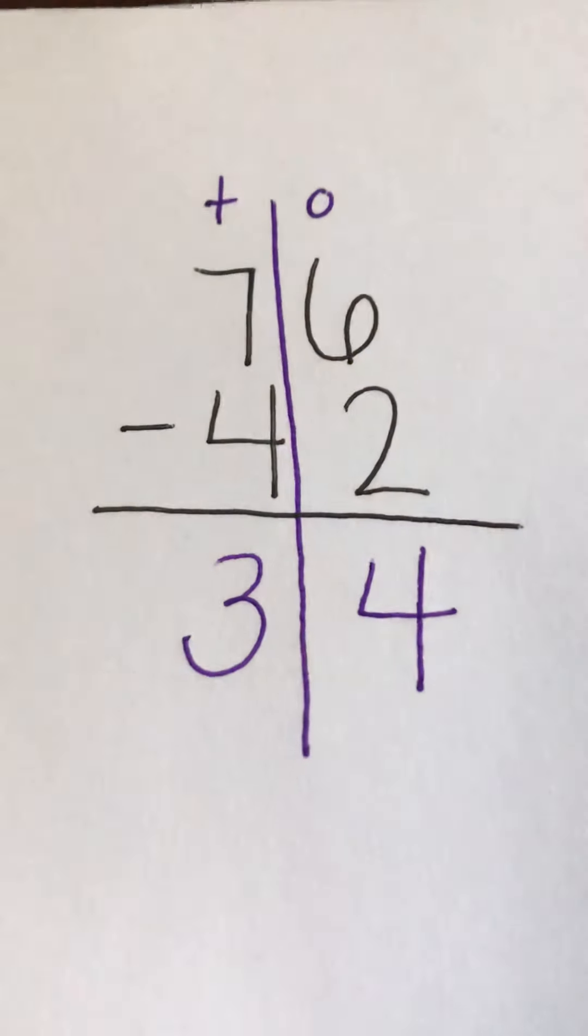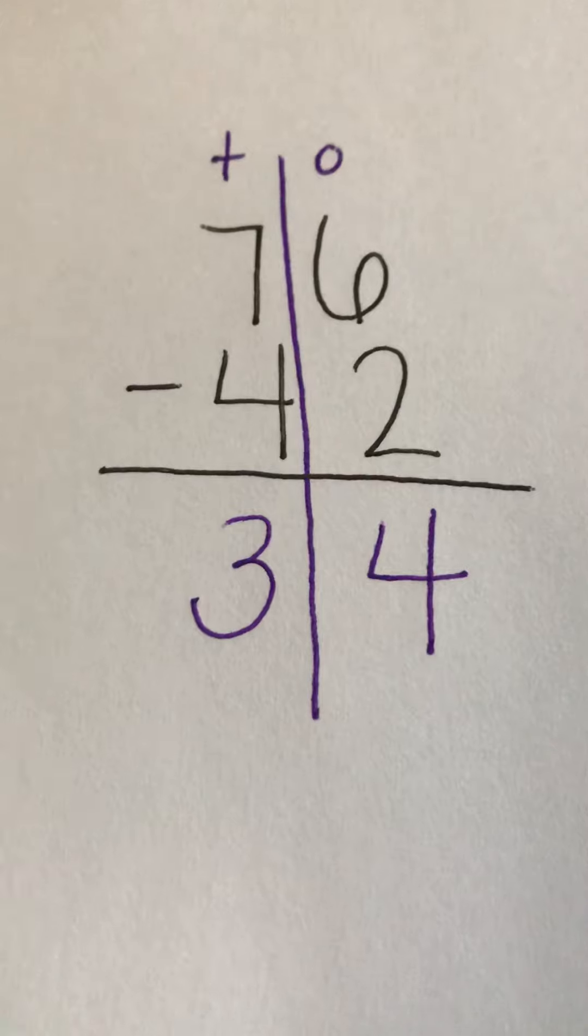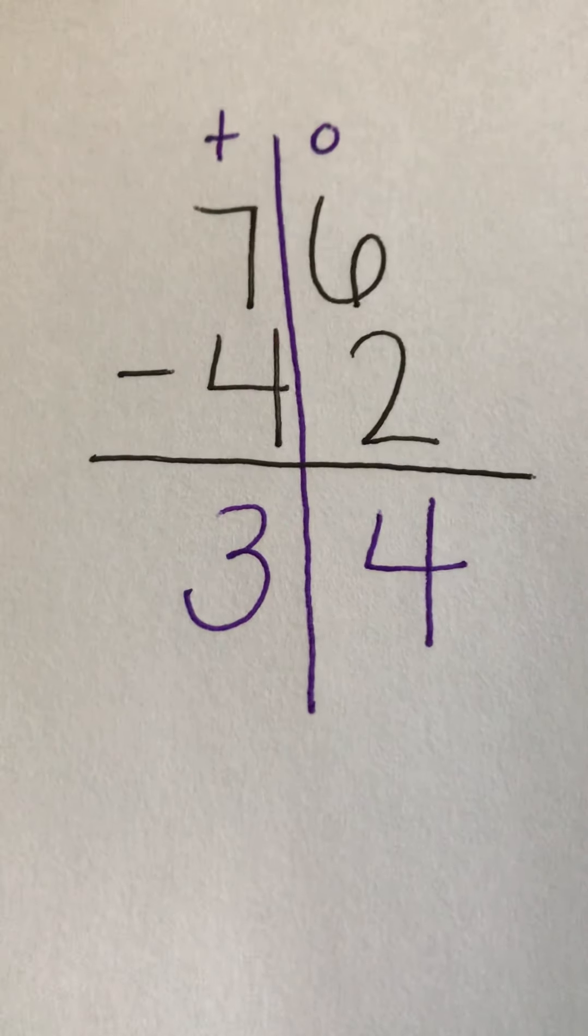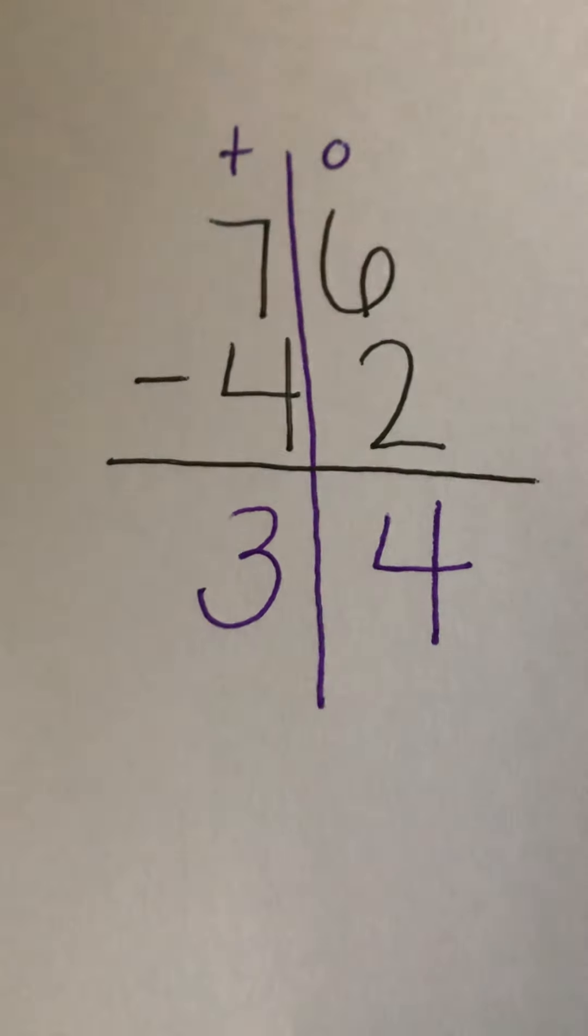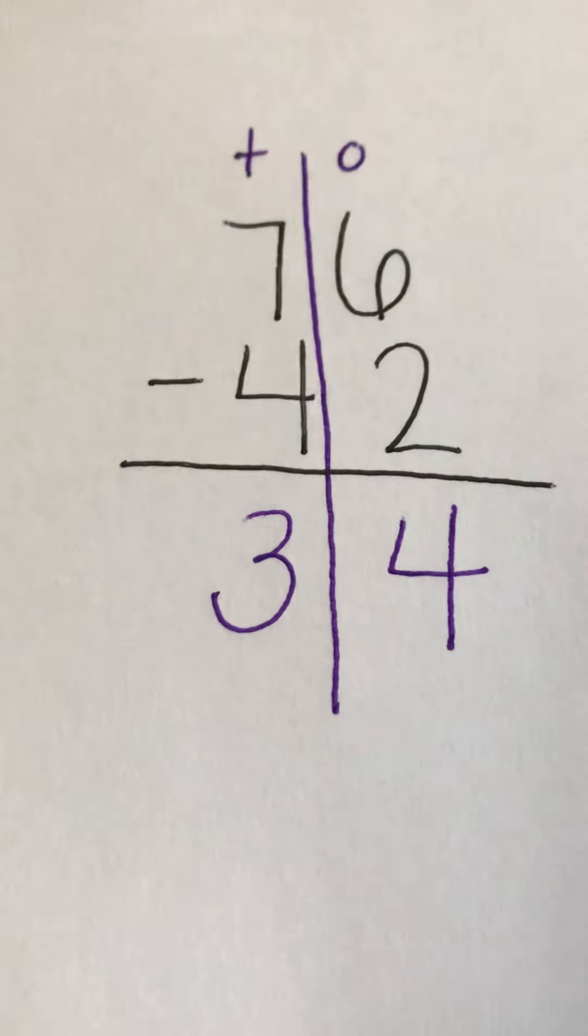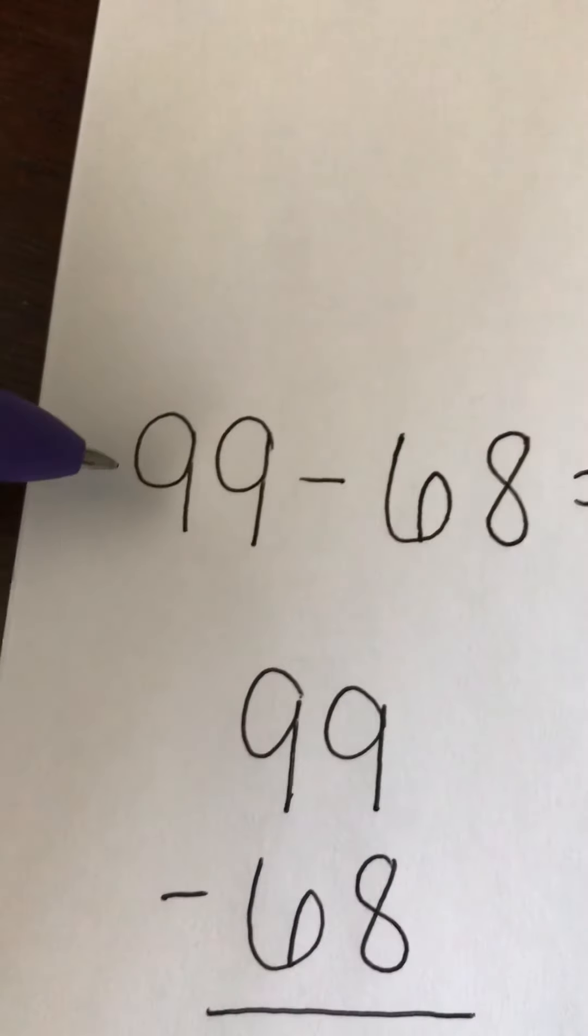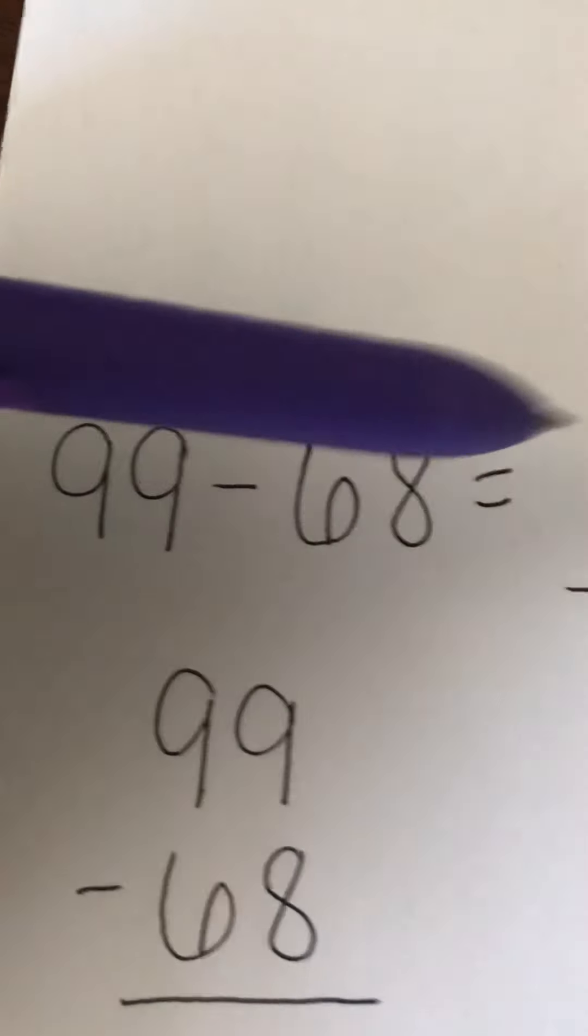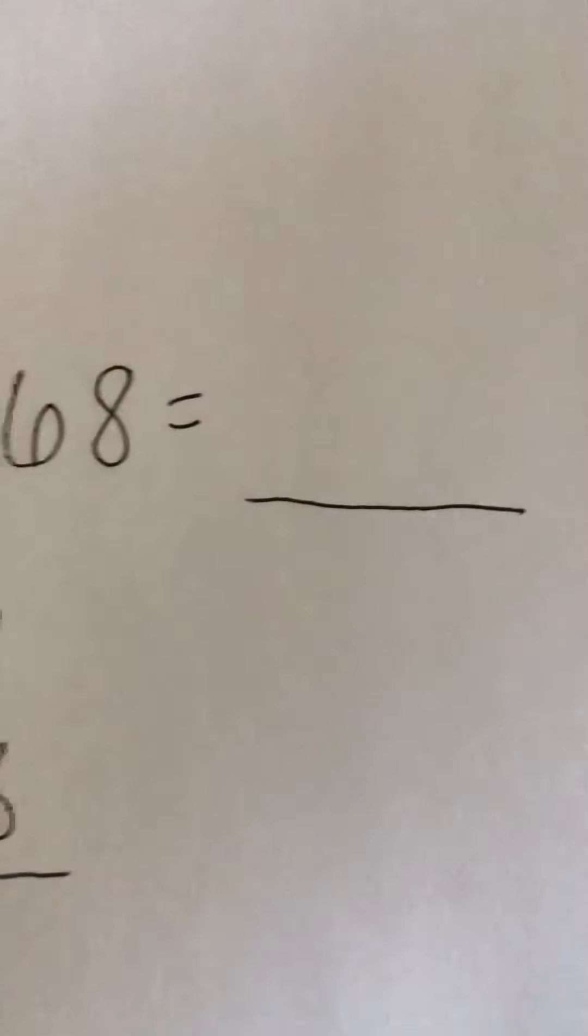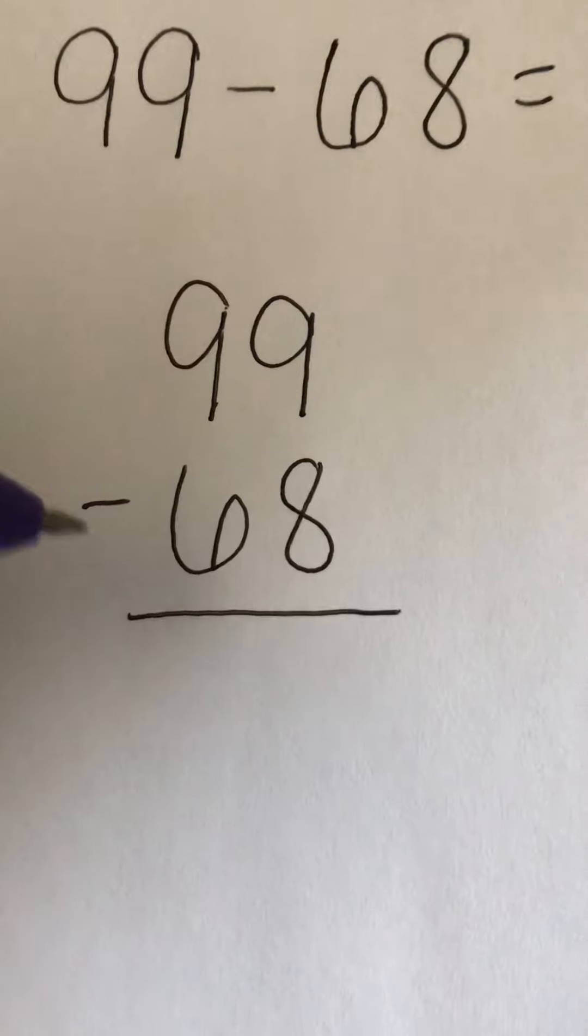This week, you're going to come up with 10 subtraction problems on your own, just like we did with the addition problems. We want to make sure that we have the bigger number on top and the smaller number on the bottom. If you write your problems out like this, 99 minus 68 equals blank, I'm just going to ask that you practice stacking your numbers up and down like this.